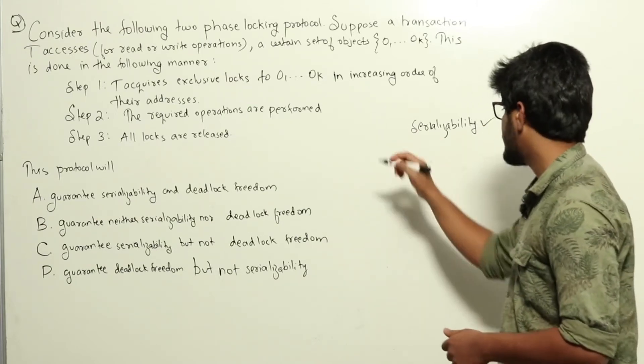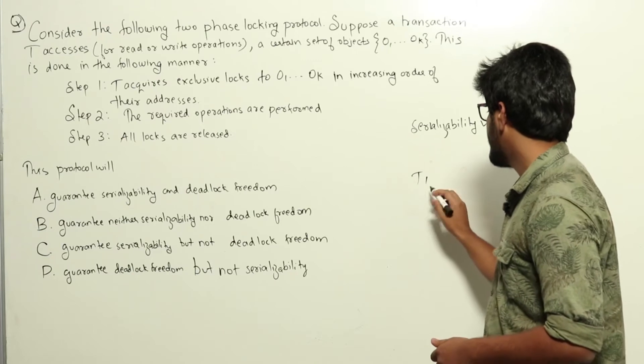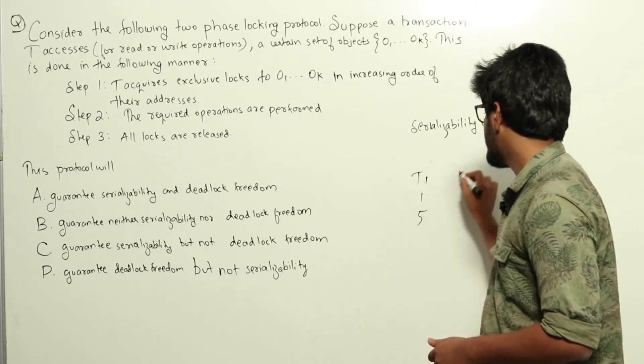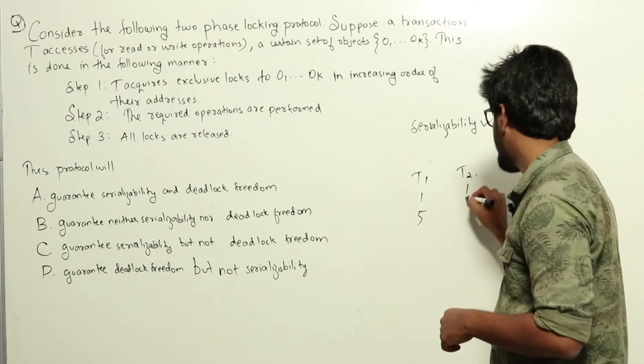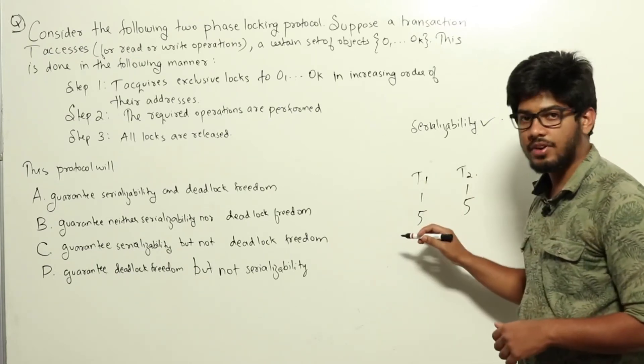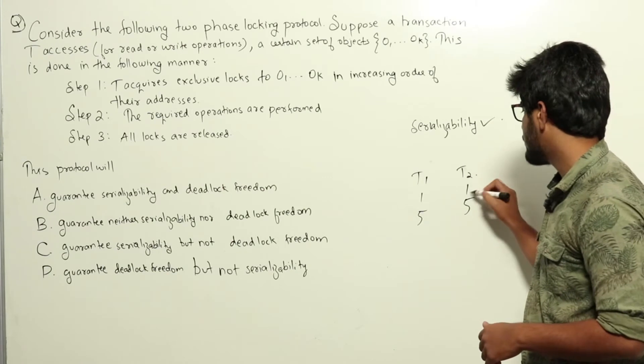See, when the circular wait condition happens, let's say T1 needs 1 and 5, T2 needs the same 1 and 5. Let's say T1 got 5 initially and T2 got 1 initially.